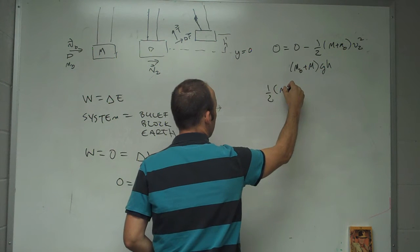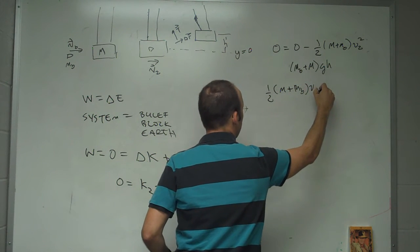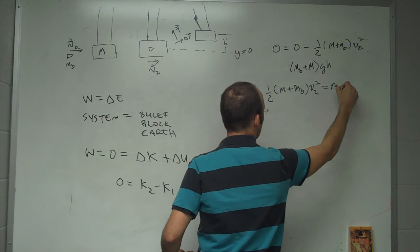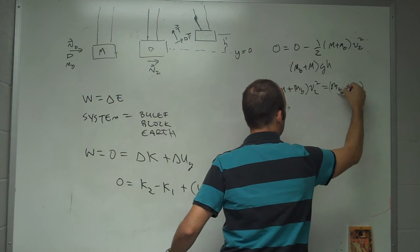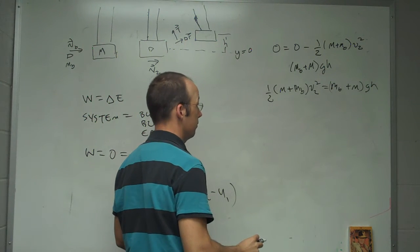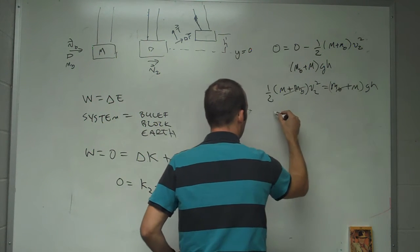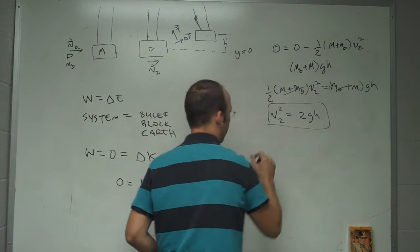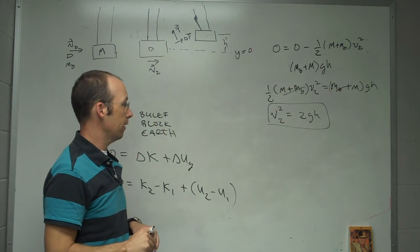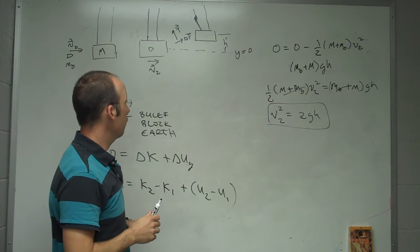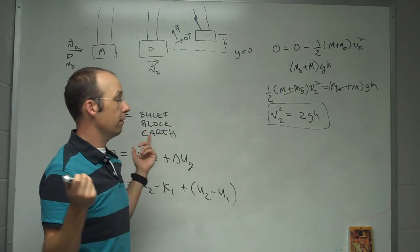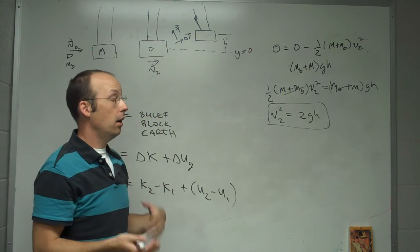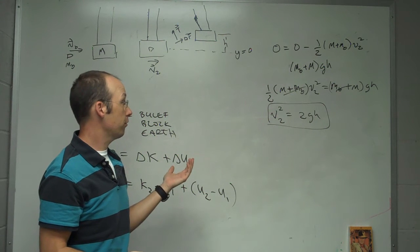So I can solve this. I get one half, M plus MB, V2 squared equals MB plus MGH. These cancel. So I get V2 squared equals 2GH. I'll just leave it like that. So some important things to note here. First, it doesn't depend on the mass. It doesn't depend on the length of the string or anything like that. Because this is the same thing as just simple throwing something up in the air. We don't have any other types of internal energy. It's pretty straightforward.